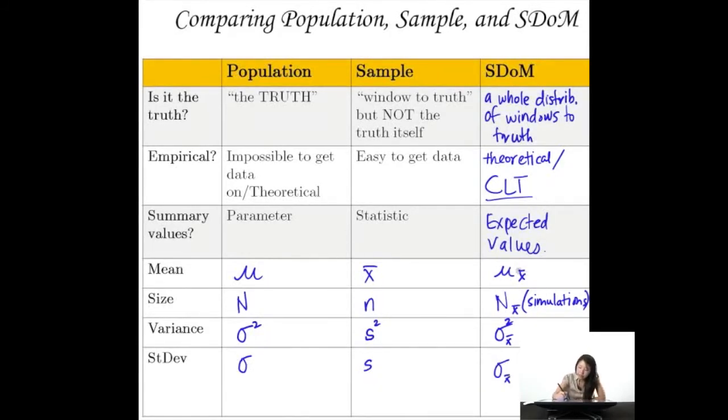And for standard deviation, instead of calling it sigma, it's just sigma sub x-bar. So notice that there are these little x-bars here, right? And that's what really sets the sampling distribution of the mean apart, because it's about the mean of means, the N of means, the variance of means, and the standard deviation of means. So it's always about means, and so because of that, you always see this sub x-bar here for all these expected values. Okay. So that's how these things fit in together.